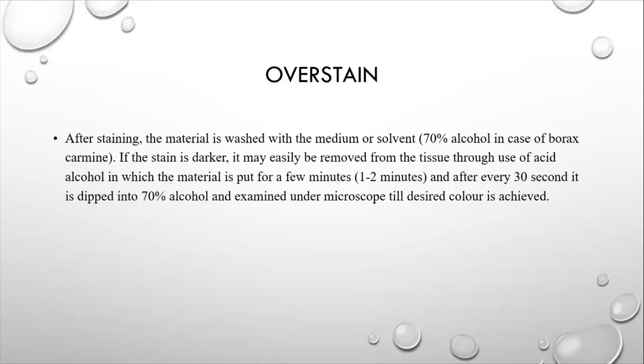Now if the slide is overstained, first you have to check your sample under the microscope. If it is overstained, then you have to use the acid alcohol in which you put the material for few minutes, about 1-2 minutes, and after every 30 seconds, it is dipped into 70% of alcohol and examined under the microscope till desired color is achieved.